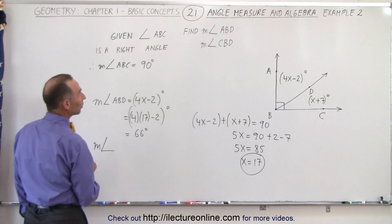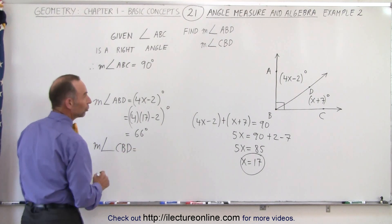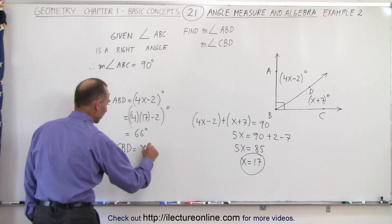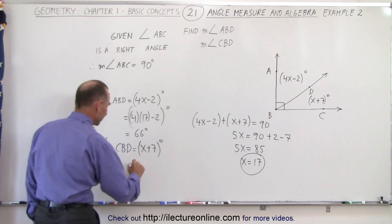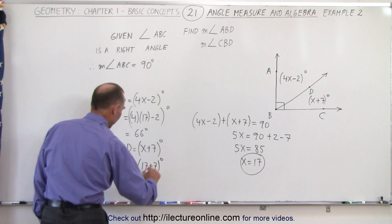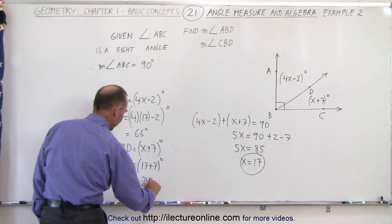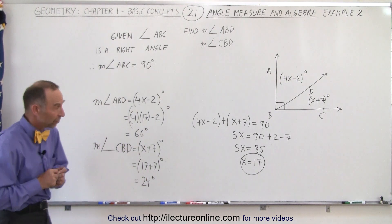The measure of angle CBD is equal to x plus 7 degrees. Well, since x is 17, that's equal to 17 plus 7 degrees, and sure enough, that's equal to 24 degrees. Notice when you add them together, you indeed get 90, which is the right angle.